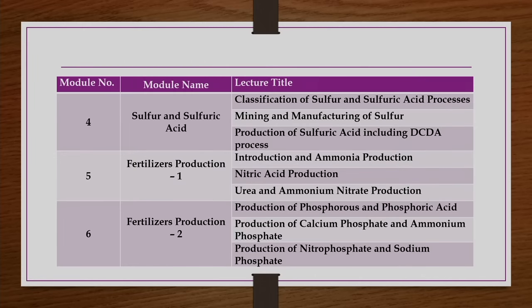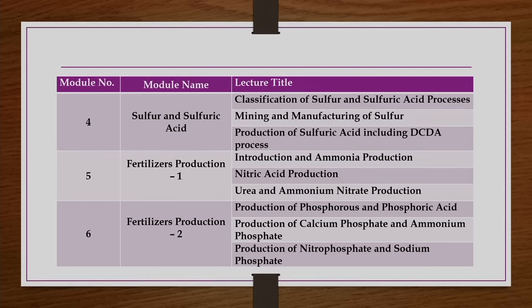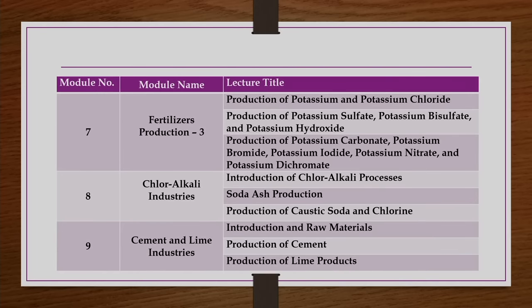Fourth week we will be discussing the sulphur industry — classification of sulphur and sulphuric acid processes, mining and manufacturing of sulphur, and production of sulphuric acid through different processes. Fifth, sixth, and seventh weeks we will be discussing in detail different types of fertilizers. India is one of the top countries producing different types of fertilizers. We will cover production of ammonia, nitric acid, urea and ammonium nitrate, phosphorus and phosphoric acid, calcium phosphate, ammonium phosphate, nitrophosphate, sodium phosphate, potassium and potassium chloride, potassium sulphate, potassium bisulphate, etc., along with associated problems and economics.